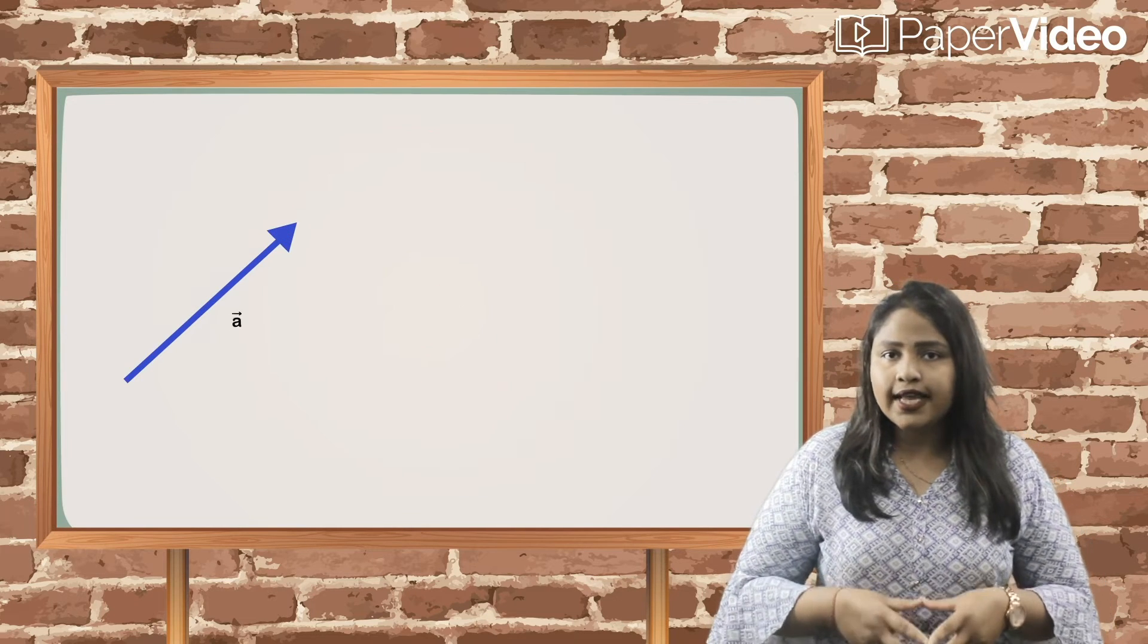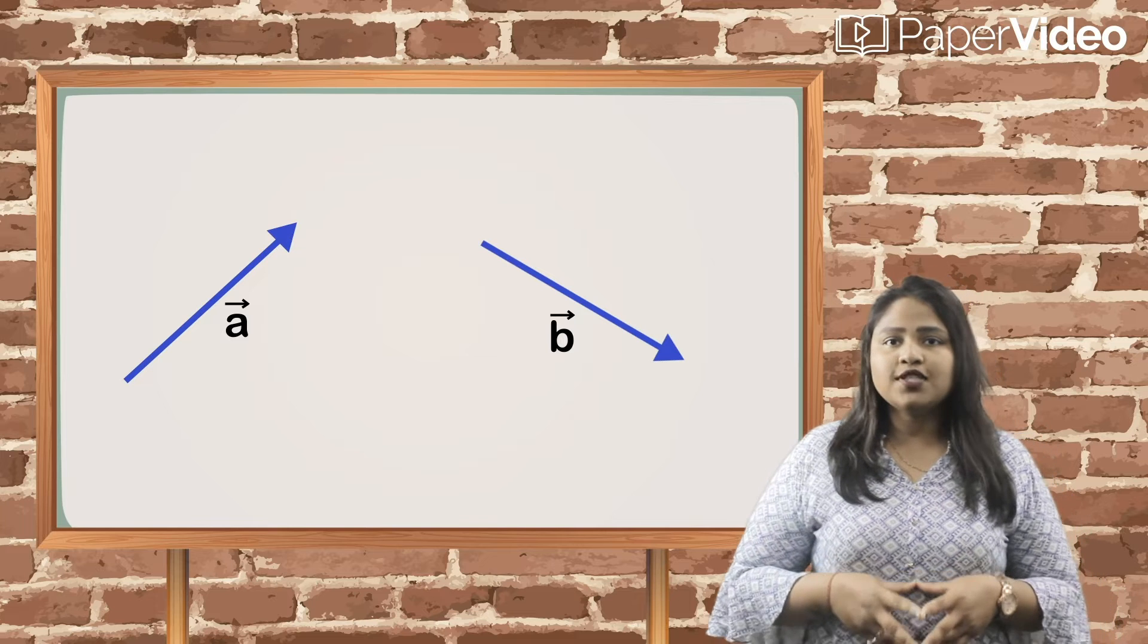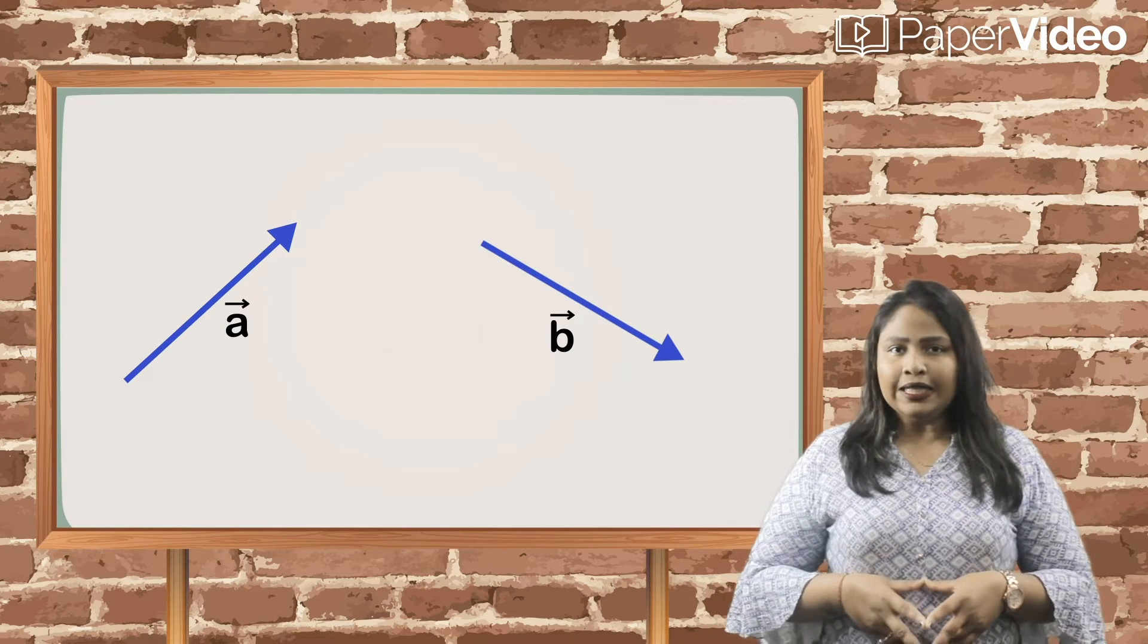Now consider the same two vectors again. What if we want to subtract these vectors? How will we do it?